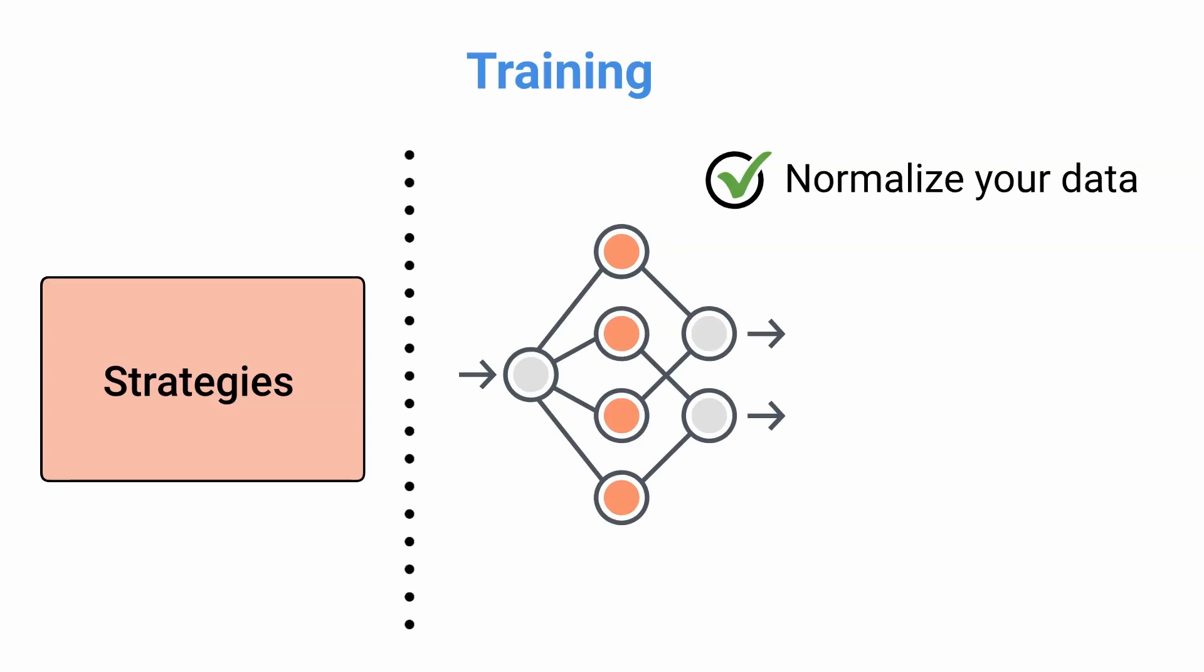Normalizing data means converting them to the same scale, within the range 0 to 1. You can also decide to standardize your data, which means making them normally distributed with mean equal to 0 and a standard deviation equal to 1.